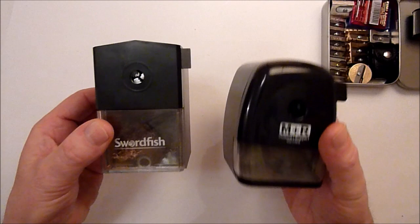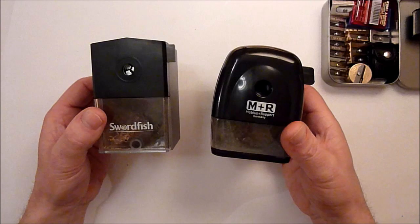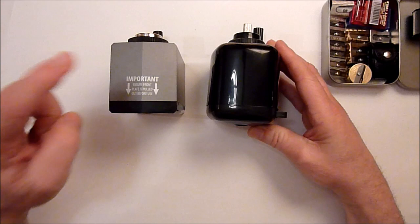So let's take a look at these two. We've got the Swordfish just here, and the M&R, Mobius and Rupert, just here. Both very similar size, they're both made out of plastic. But they are very different in fact. So take a quick look at the specs.